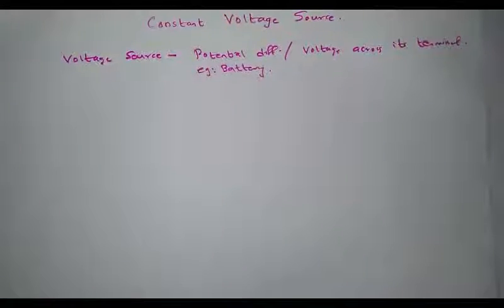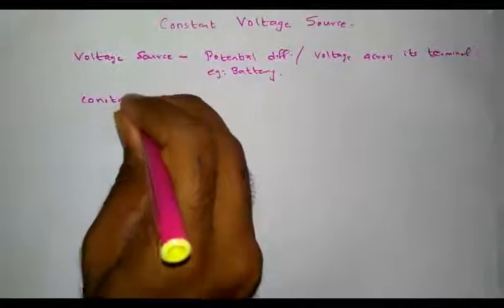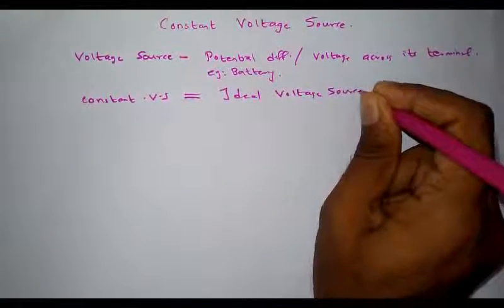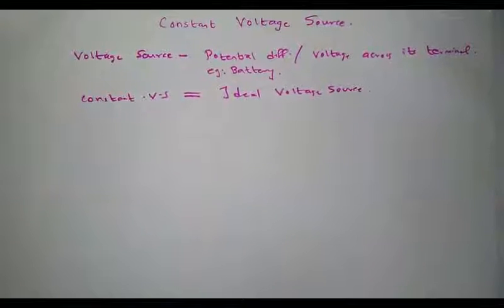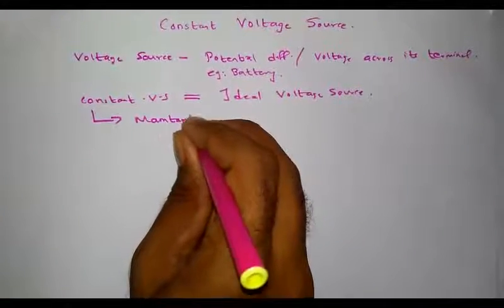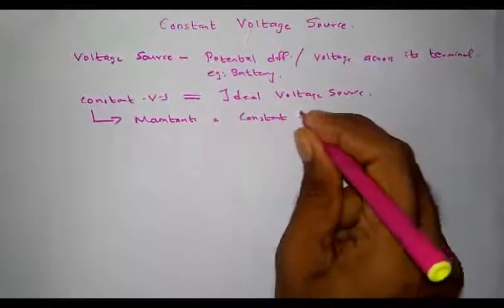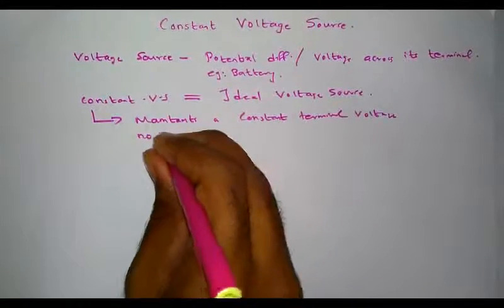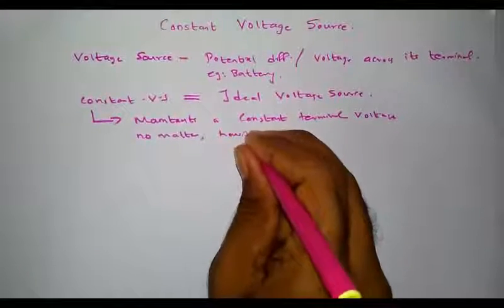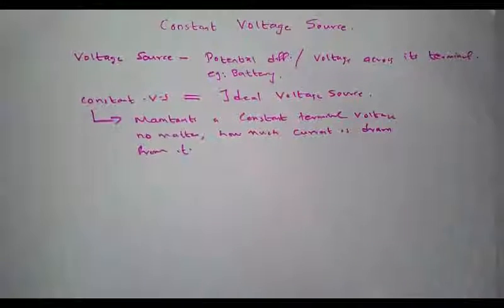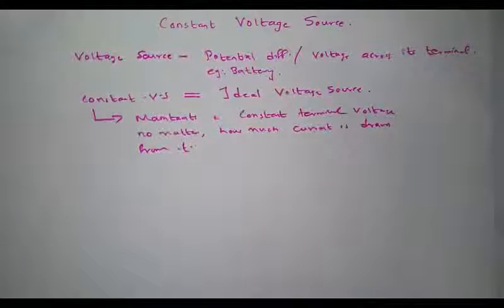Next is constant voltage source, which is also termed as an ideal voltage source. It is an ideal concept. A constant voltage source is defined as one that maintains a constant terminal voltage no matter how much current is drawn from it.